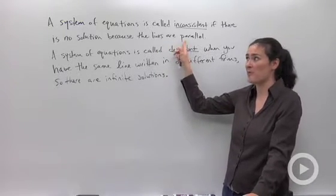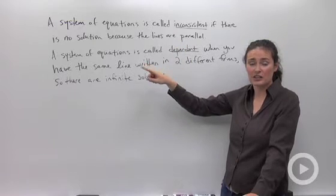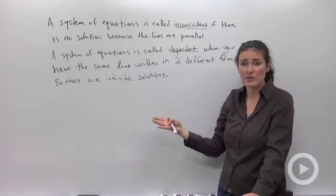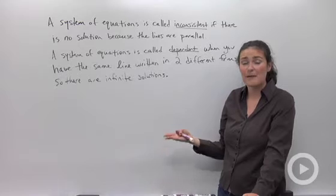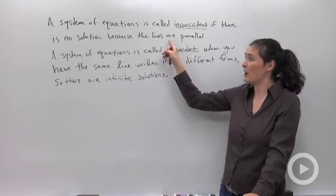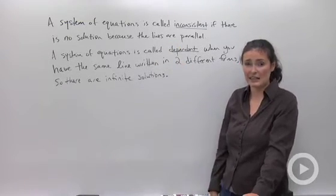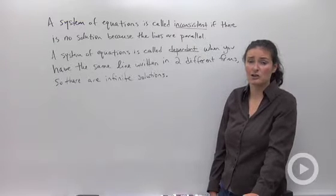So if they have the exact same slope, they'll be parallel and there'll be no solution. No solution because solution means where the lines cross. And parallel lines never ever cross. That's one vocabulary word to keep in mind. Inconsistent means parallel, no solution.